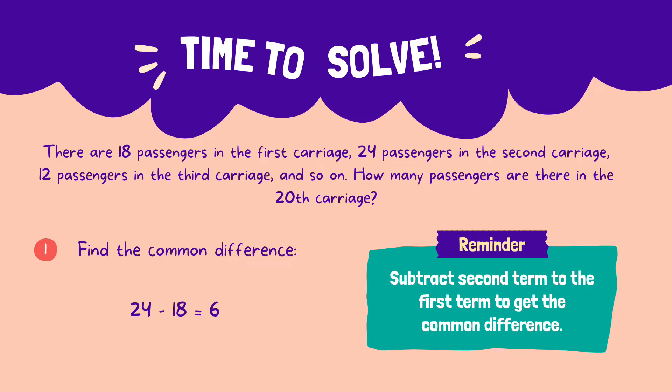To find the common difference, let us subtract the second term and the first term in the given problem. That would be 24 minus 18. When you subtract 24 and 18, you'll get 6. And that would be our common difference.